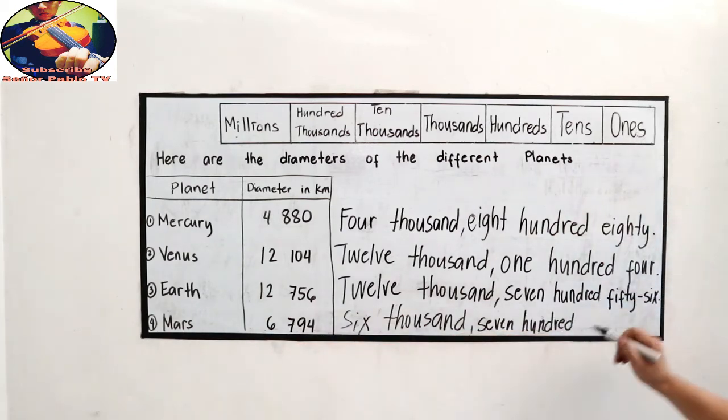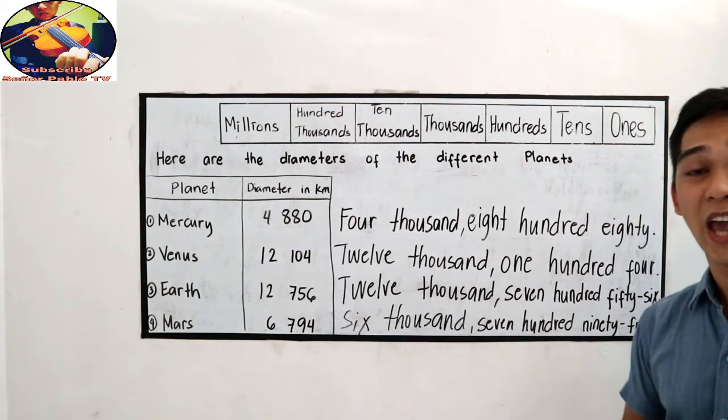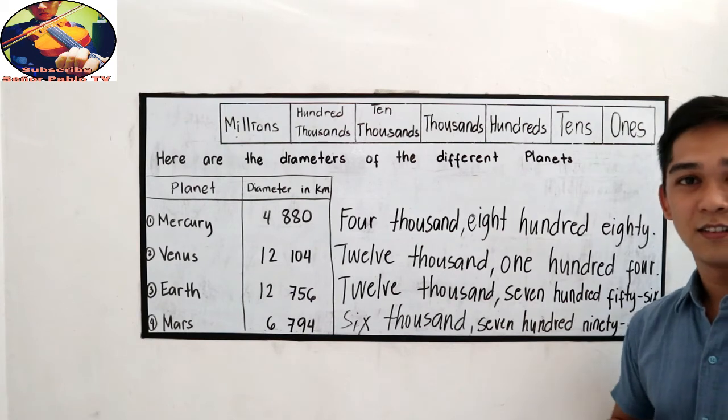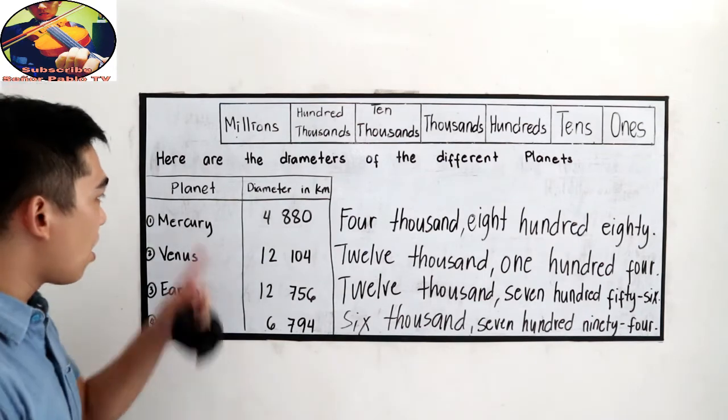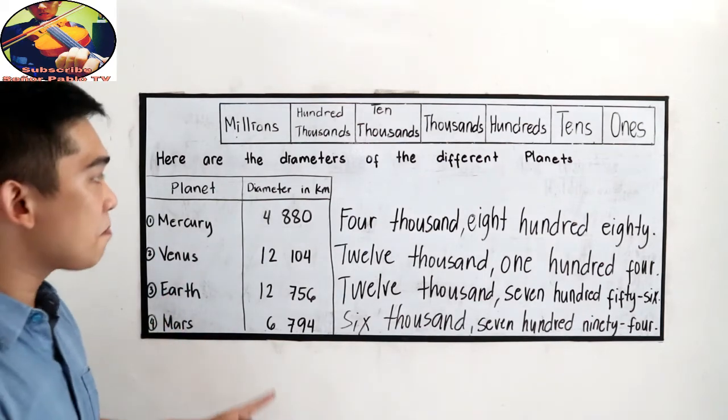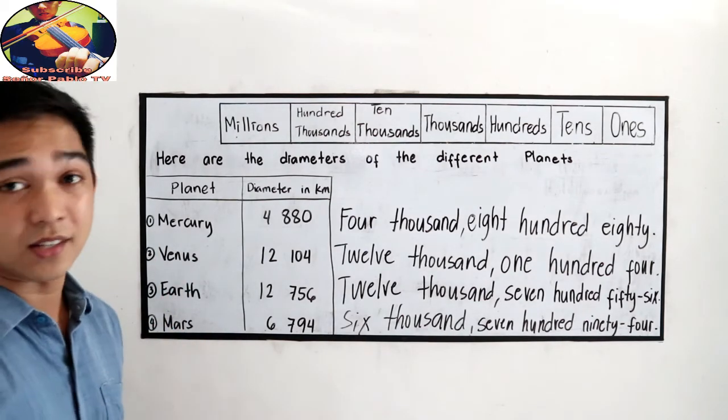Ninety-four. So, ninety, hyphen, then four. Please double-check your spelling. So those are the different diameters of different planets in our solar system.